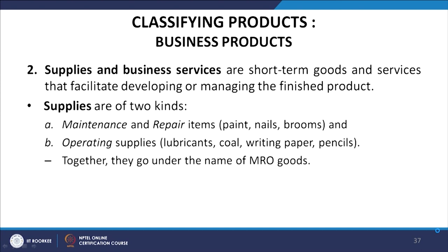Supplies and business services are short-term goods and services that facilitate developing or managing the finished product. Supplies are of two types: maintenance and repair items — such as paints, nails, and brooms — and operating supplies like lubricants, coal, writing paper, and pencils. Together they are known as MRO goods (Maintenance, Repair, and Operating supplies). Supplies are usually purchased with minimum effort on a straight rebuy basis.